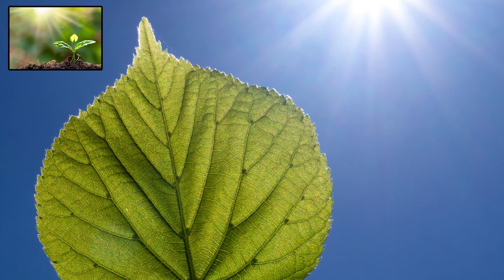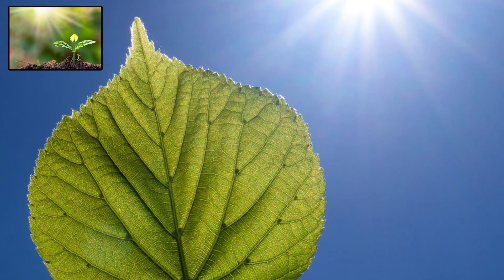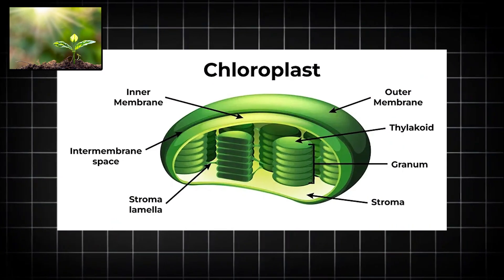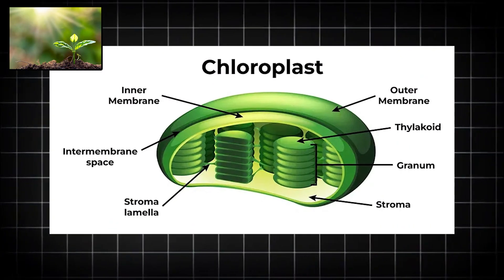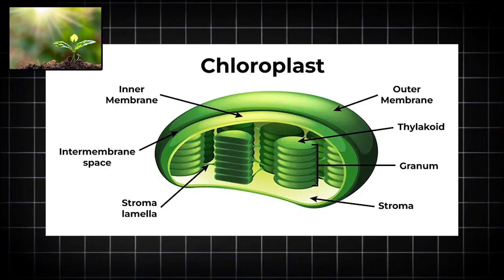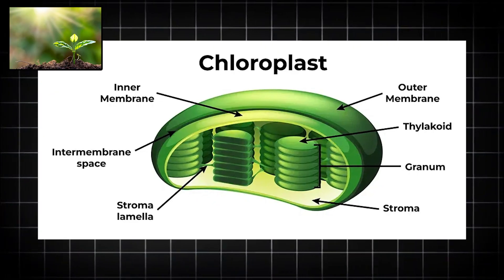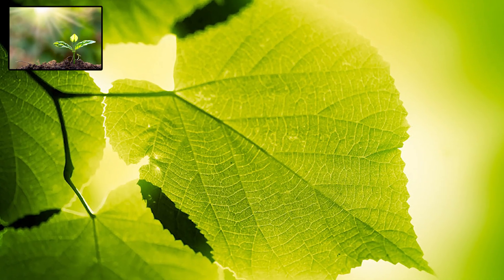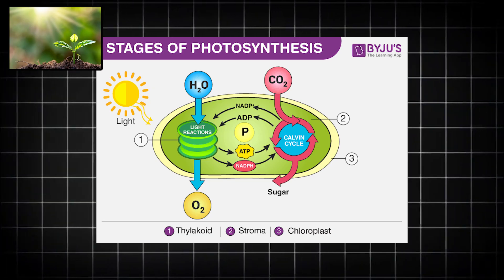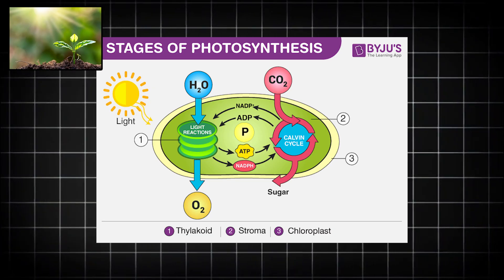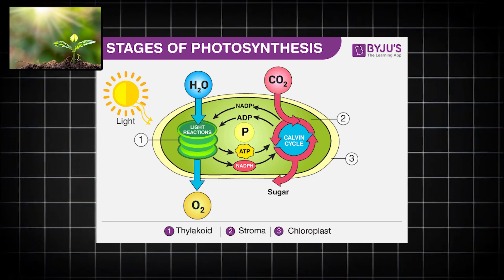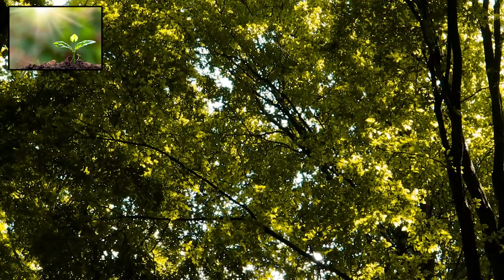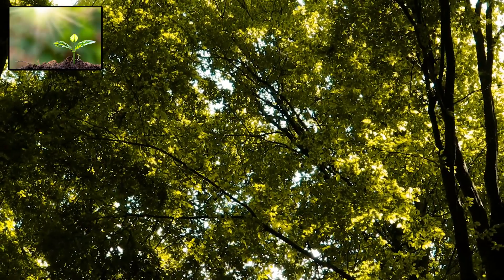In plants, photosynthesis happens mainly in the leaves, specifically inside little structures called chloroplasts. These chloroplasts contain chlorophyll, the green pigment that captures sunlight. When light hits a leaf, it's like flipping on a factory. Carbon dioxide from the air and water from the soil are converted into glucose, which the plant uses as food, with oxygen getting released into the air as a bonus.